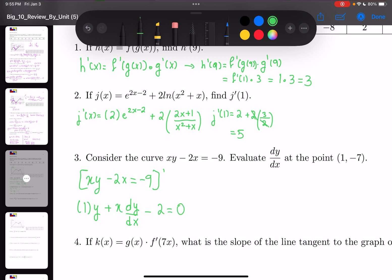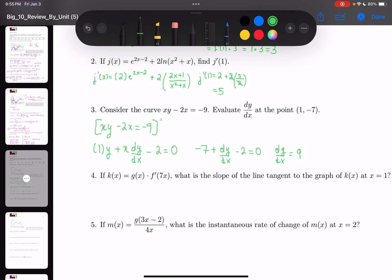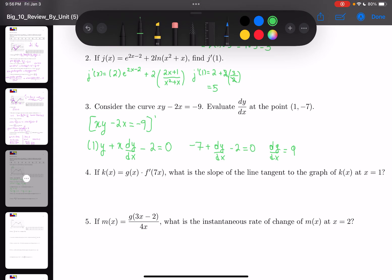We're going to replace x with 1, y with -7, so -7 + (dy/dx) - 2 = 0. So dy/dx is equal to 9.